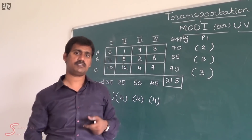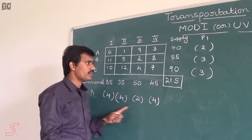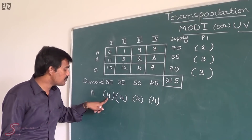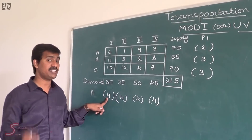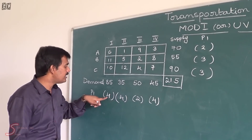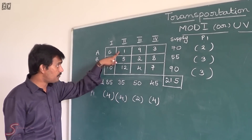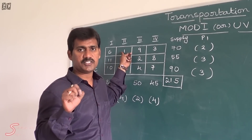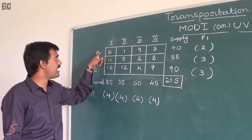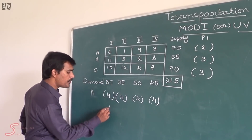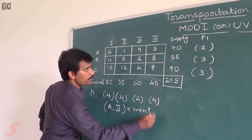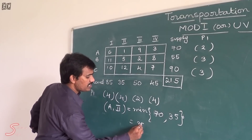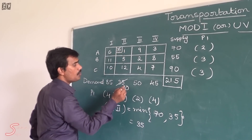The penalty is the difference between the first and next smallest values. Now observe the maximum penalty — with the maximum penalty we allocate to the least cost cell. The maximum penalty here is 4. The least cell among those with maximum penalty 4 is 1 (cell A,2). We allocate to cell A,2 the minimum of supply and demand: supply is 70, demand is 35, so we allocate 35 here. Demand becomes 0 and supply balance is 35, so market 2 vanishes.